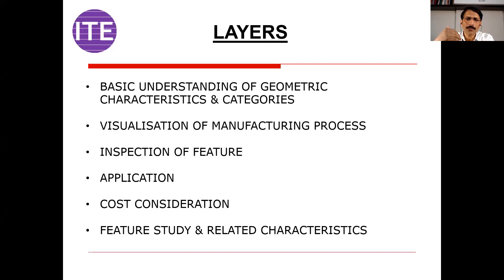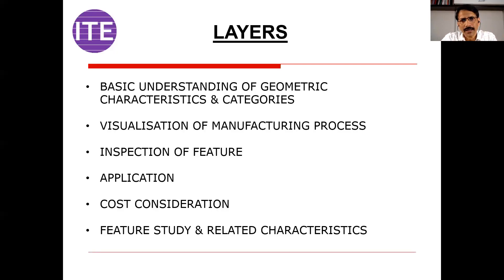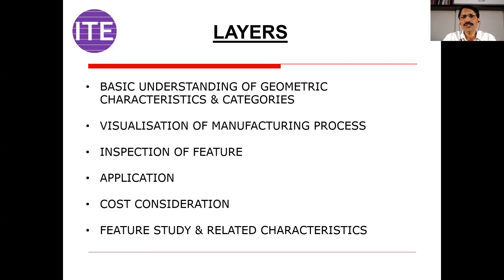The next point is cost consideration. There should always be parallel thinking about how to reduce the cost of the product, because some characteristics will definitely increase cost. There should be a design review — companies use a pre-end concept where, before releasing a drawing, there is a meeting with production, quality, purchase, marketing, and service engineers. They review the drawing and give feedback on feasibility, implications, and whether inspection facilities are available. Cost is one key factor — we must consider whether we are going to increase the cost of the product.